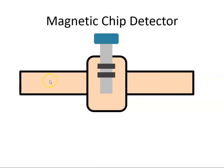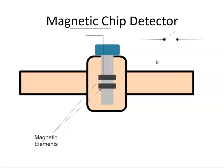So this is the oil line. So when we install the magnetic chip detector, we have these magnetic elements and they are connected electrically, so there is a wire going to both of these.